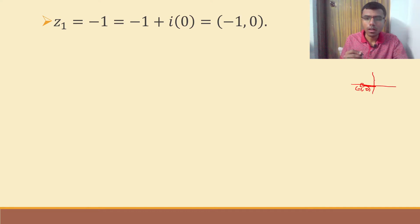Now what is this argument? Argument is how much angle does this line make with the positive x-axis. So if you'll check this angle, this will come out to be 180 degrees.